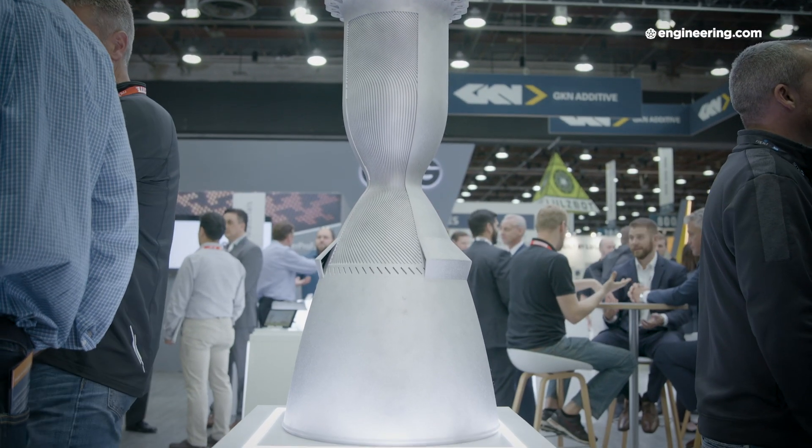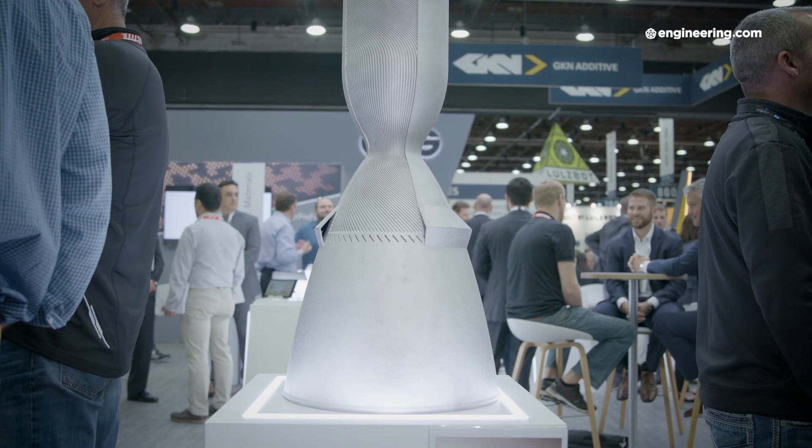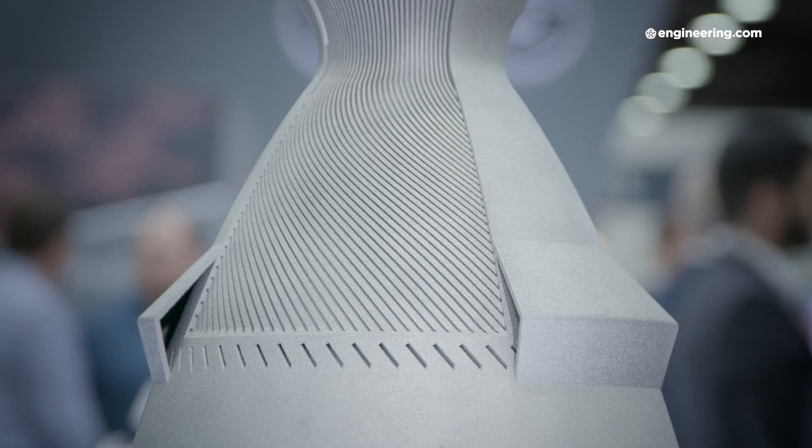You're looking at the largest 3D printed rocket engine nozzle printed in a single piece. Now this represents some of the key strengths of metal additive manufacturing: part consolidation, light weighting and unique design features like the conformal cooling channels running through this nozzle.